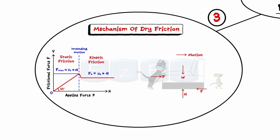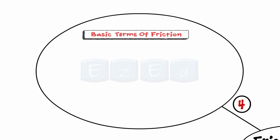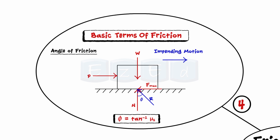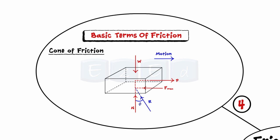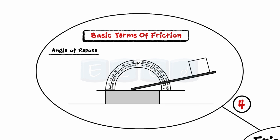Using a simple experiment, we obtained a relation between the applied force and the frictional force developed. We consequently learned about static friction and kinetic friction, and then the static and kinetic coefficients of friction. Finally, we learned about the basic terms used in friction: angle of friction — the angle made by the resultant of the limiting frictional force F_max and the normal reaction N with the normal reaction. If the direction of the applied force is changed by rotating through 360 degrees in a plane parallel to the contact surface, the resultant R generates a right circular cone of semi-central angle phi — called the cone of friction. The minimum angle of inclination of a plane with the horizontal for which a body will just slide down without any external force is called the angle of repose.